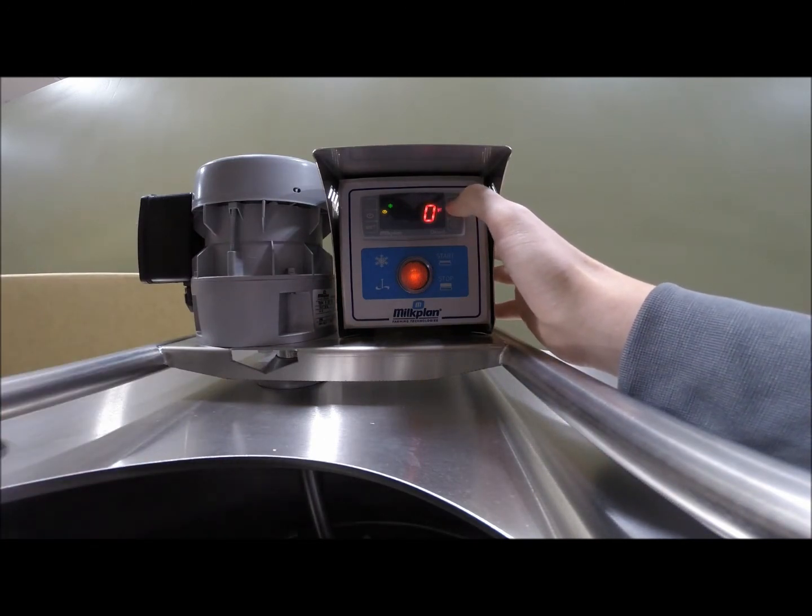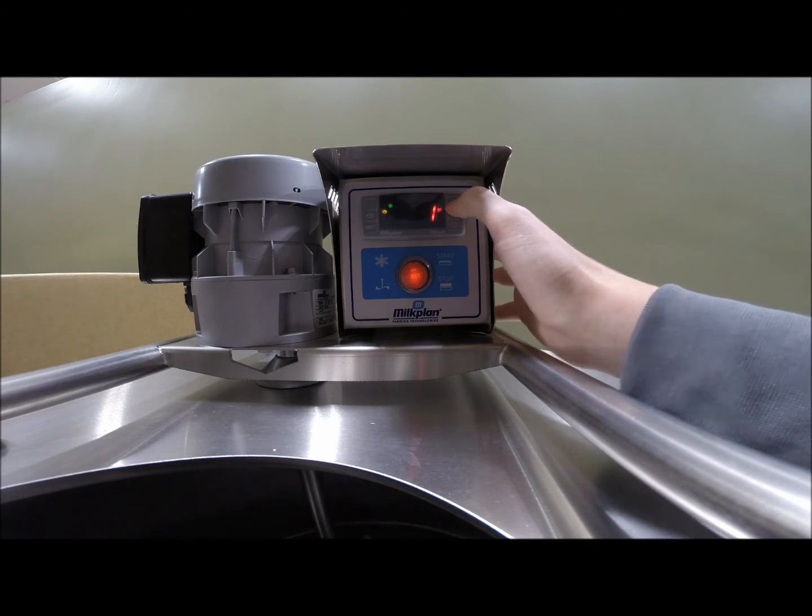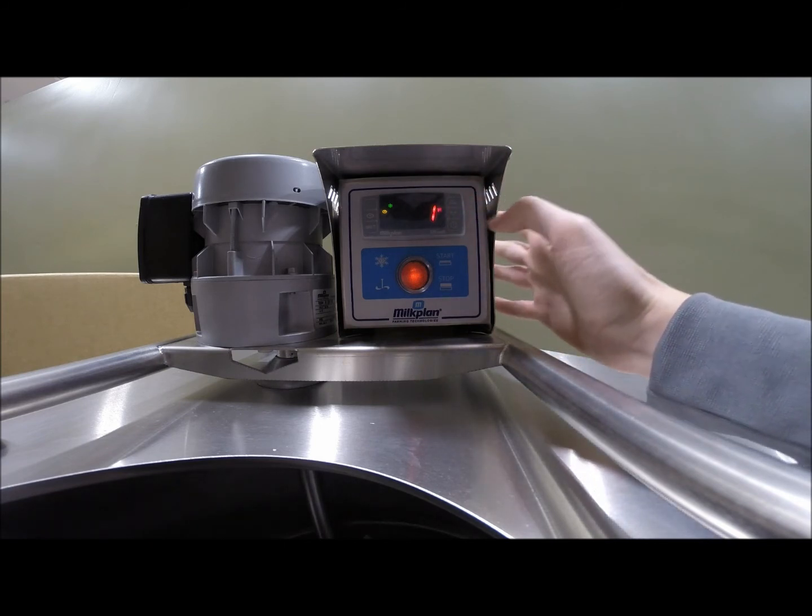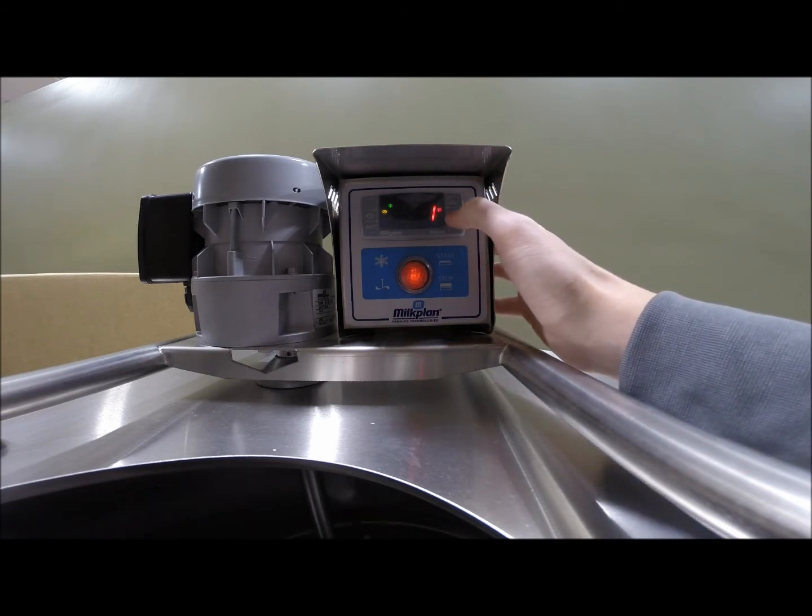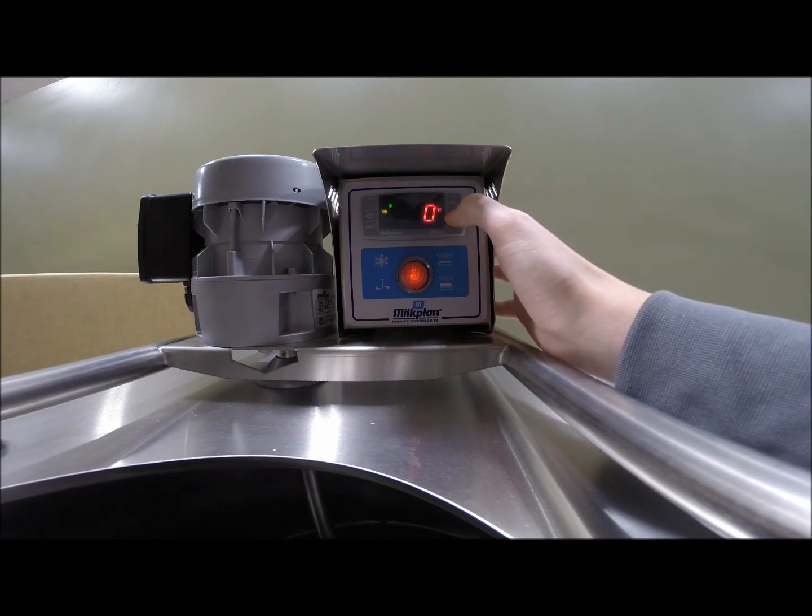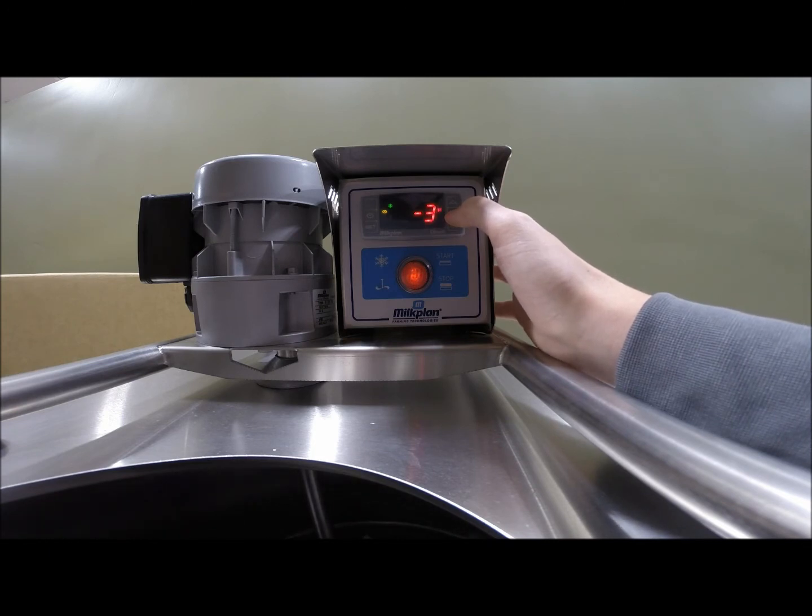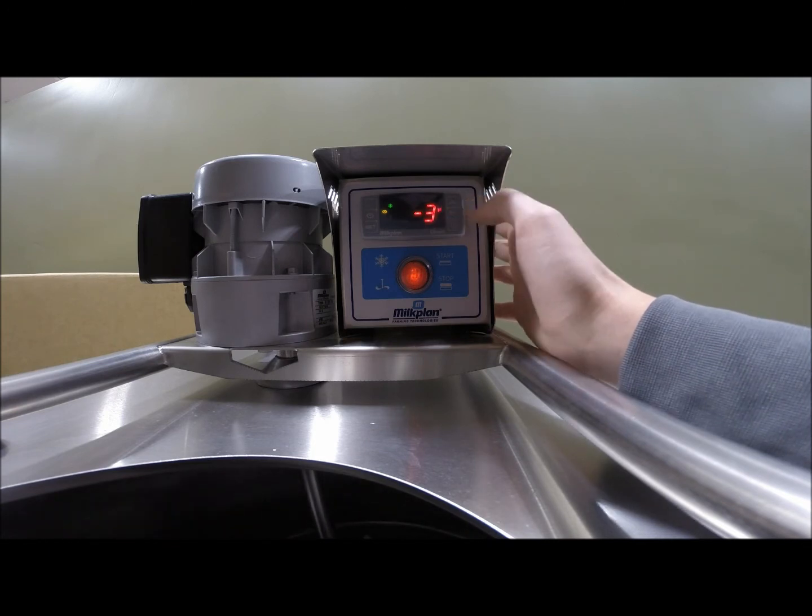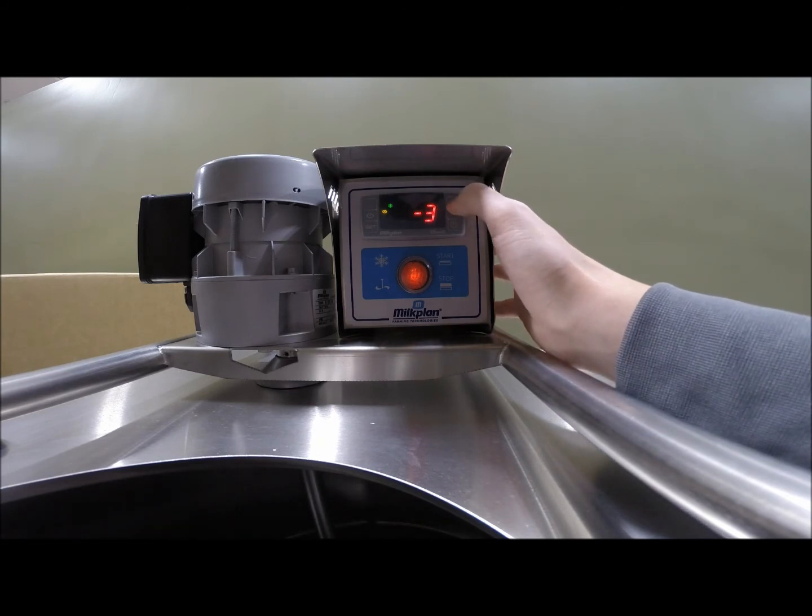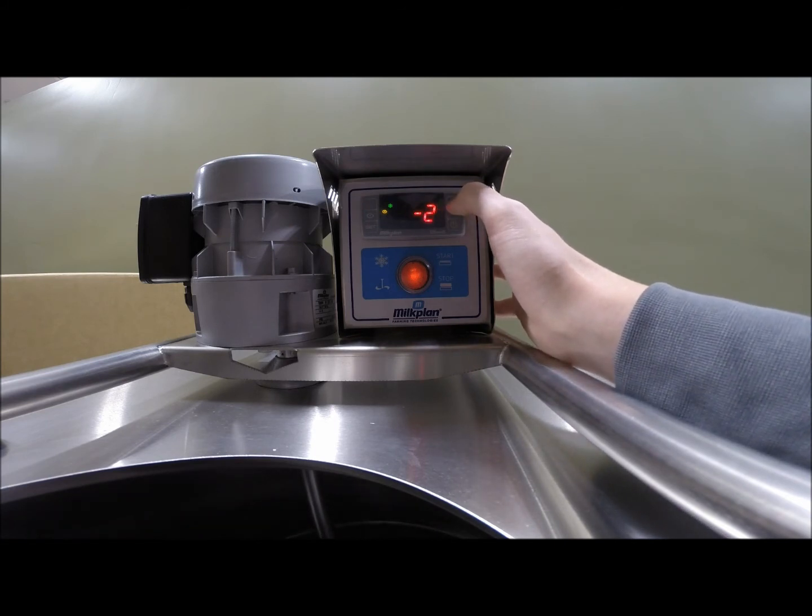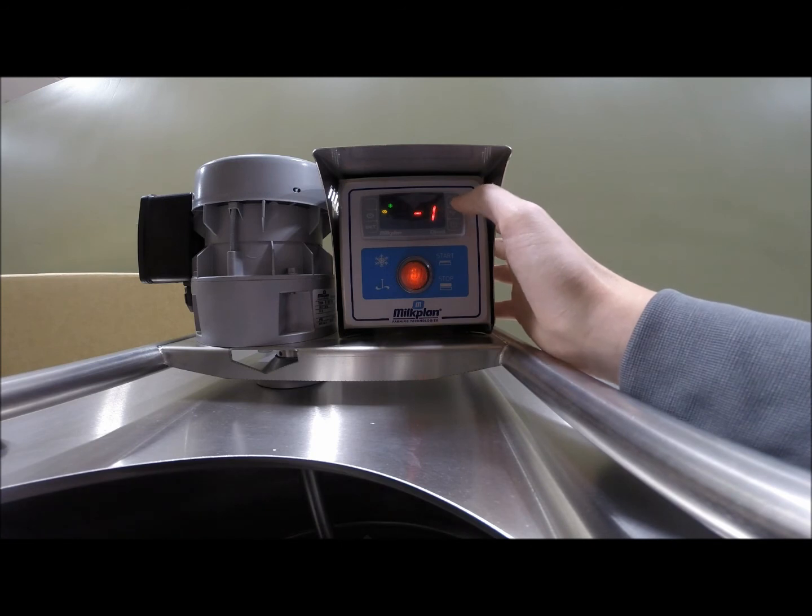If your tank is reading lower than the actual temperature of the milk, raise the number by the appropriate amount. If your tank is reading higher than the temperature of the milk, lower that value by the appropriate amount. Once you have changed that number, hit the set key again.